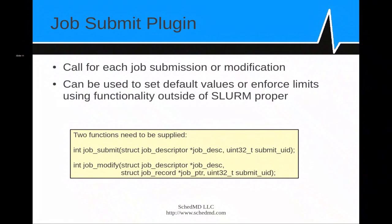Here's an example of one plug-in. Whenever a job is submitted to SLURM, a plug-in called the job-submit plug-in is called. It has just two functions: one called on job submit and another called when a job is modified, such as to change its time limits. These can be used to set default values or enforce limits using functionality outside of SLURM proper. For example, it could determine which queues a job can be submitted to and route the job to whichever queue is best suited based on time limits, job size, user ID, or other criteria.